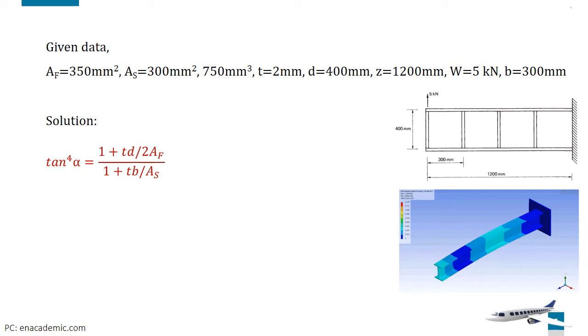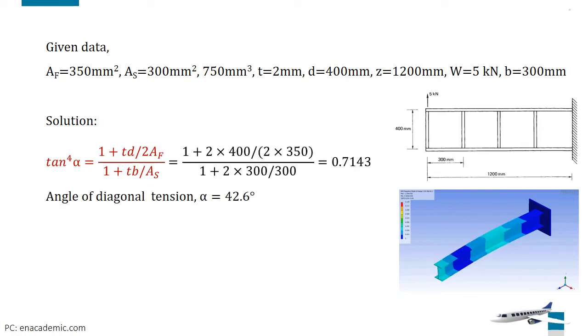Then write, tan⁴α is equal to (1 + td/2A_F) divided by (1 + tb/A_S). Here, all values are given. Solving this equation with those values, we get the angle of the diagonal tension α is equal to 42.6 degrees.